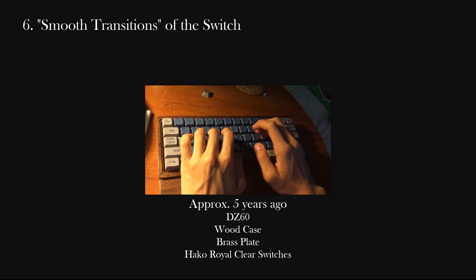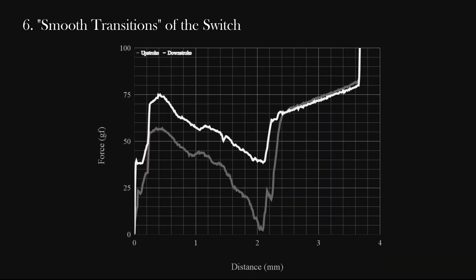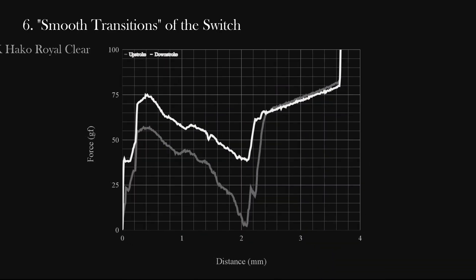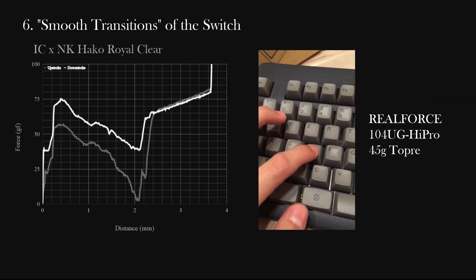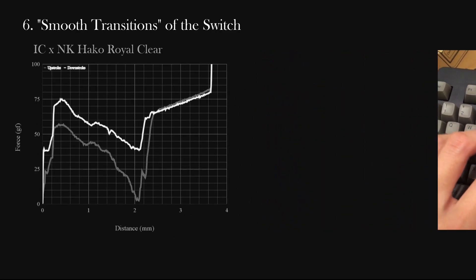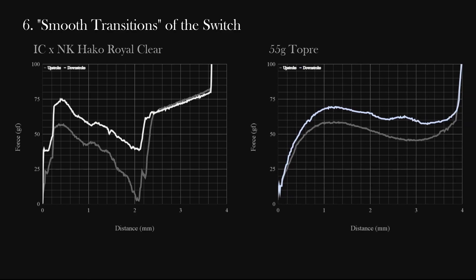Lastly, there is one quality that I haven't heard much about, and that's how smoothly the switch transitions between pre-travel, tactile buildup, tactile drop, and the rest of the key feel. I recall using Hako TrueClears around four years ago, underrated switch by the way. And I distinctly remember the tactile buildup, drop, and the rest of the key feel to be very, very distinct from one another. Looking at the force curve, it depicts exactly how that felt. Now compare this to Topre, which I believe has the most seamless transitions between the different states, and that can also be seen just by taking a look at the force curve. Maybe there are other qualities I'm missing, but these are at least the major ones I could think of.